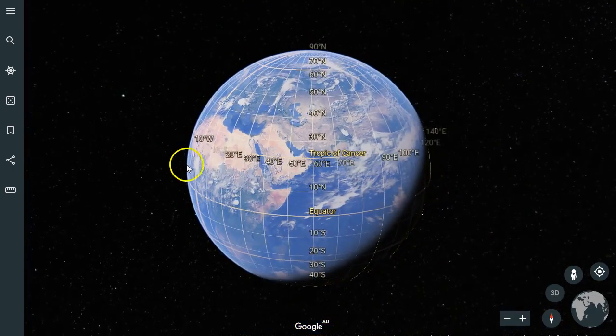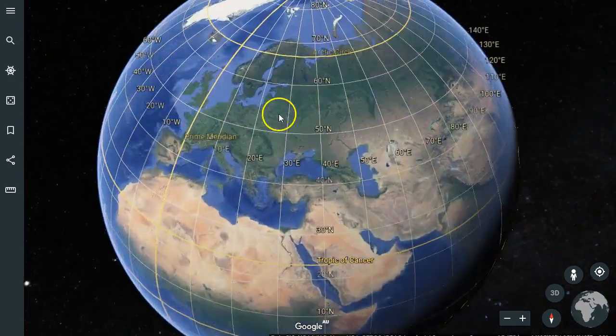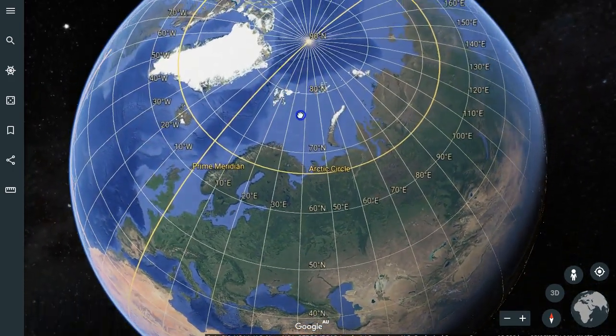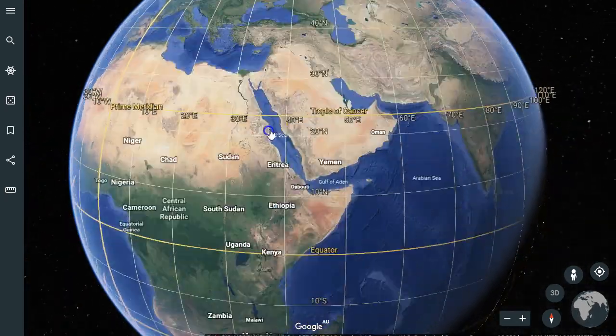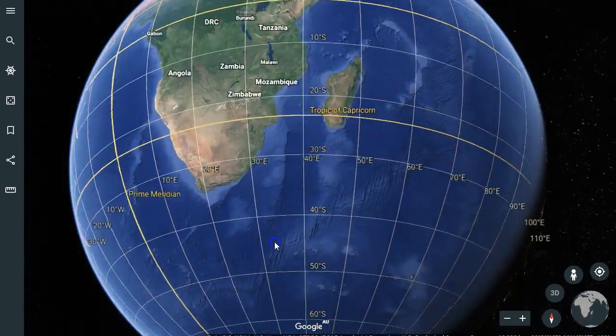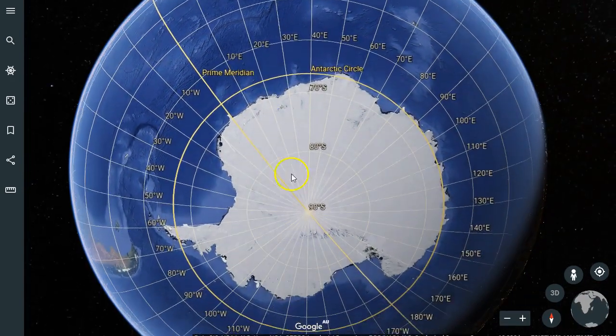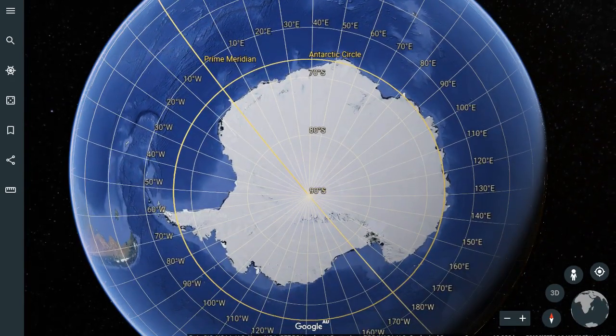So let's zoom out again, and if we look at the north pole you can see that the north pole is actually ocean, which means the south pole must be land. Let's go down. There we go. There's our south pole and that actually lies on land.